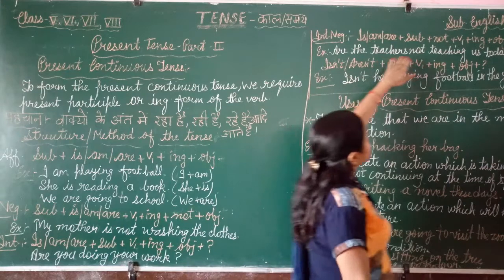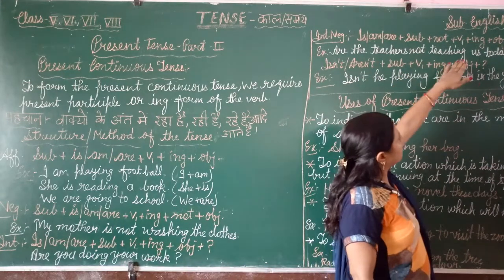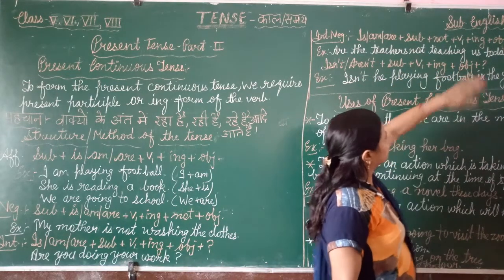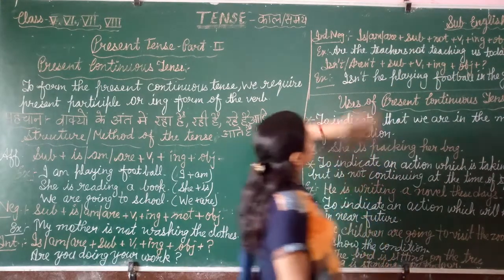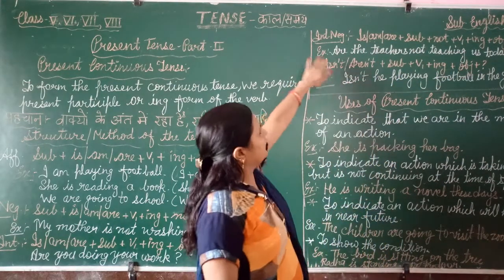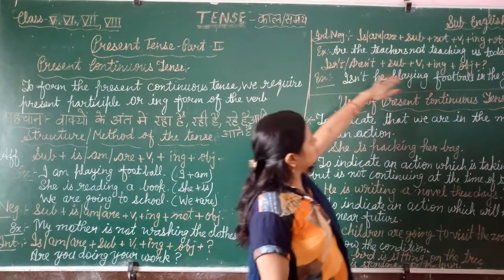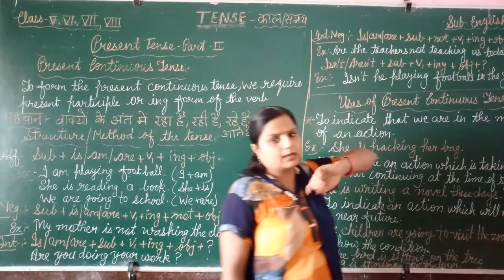For negative interrogative, the structure is: is/am/are plus subject plus not plus V1 plus ING plus object. For example: are the teachers not teaching us today?